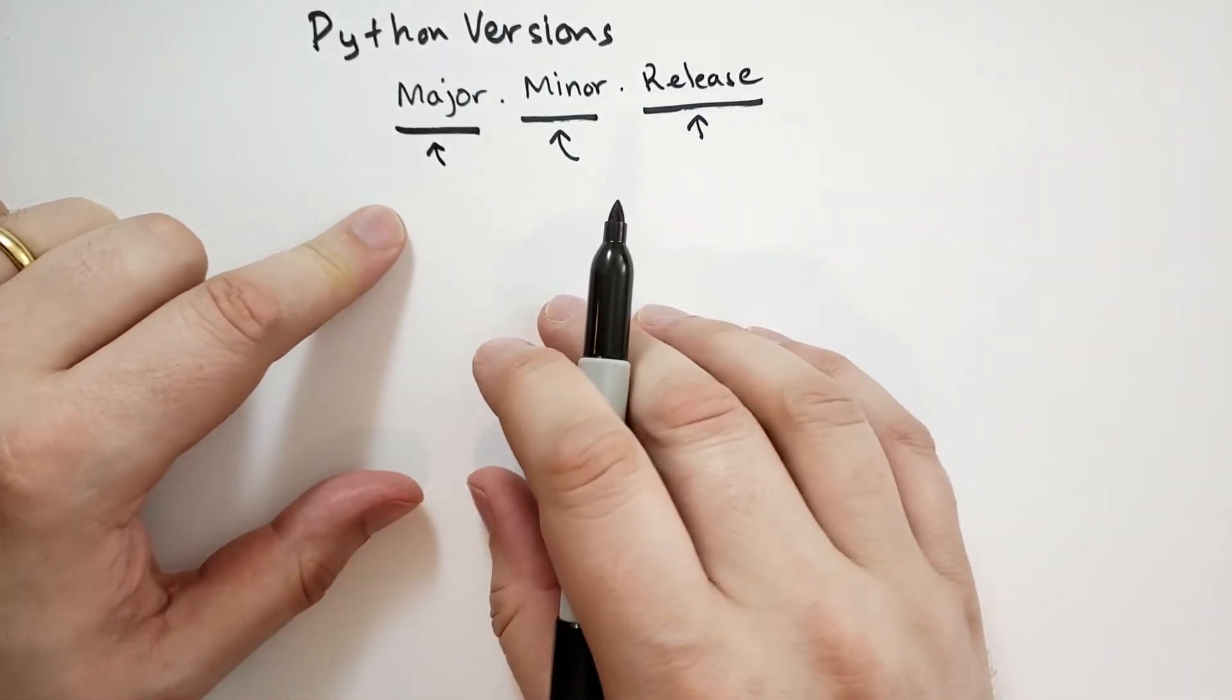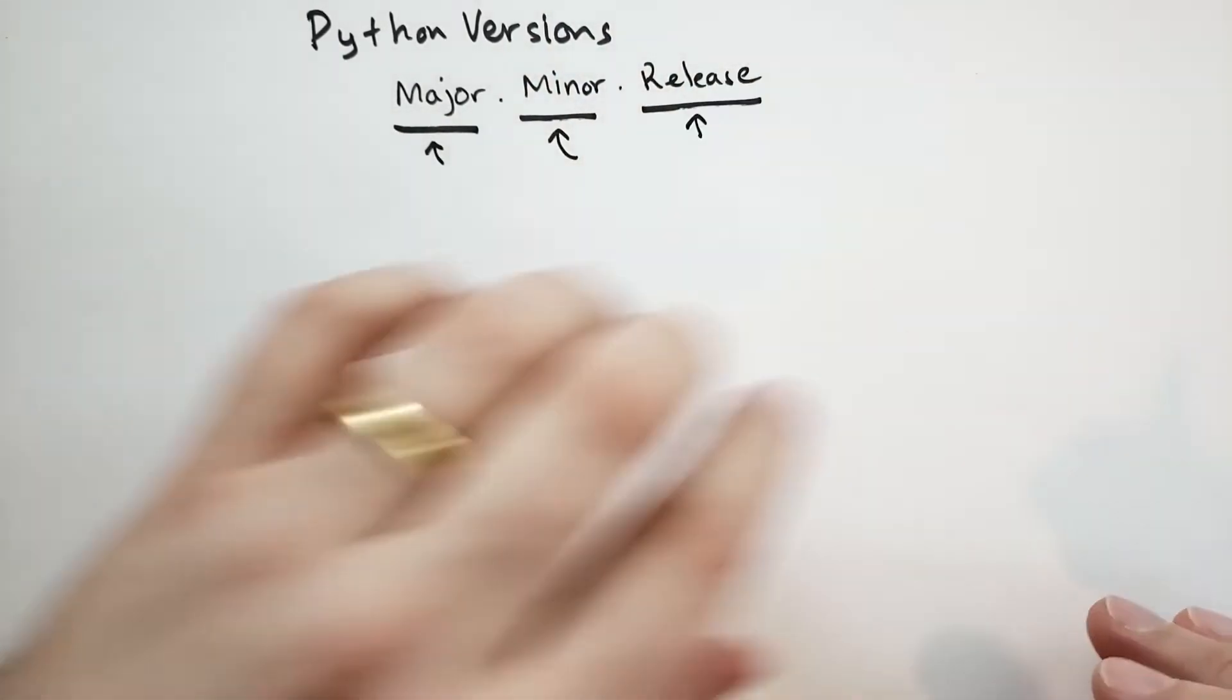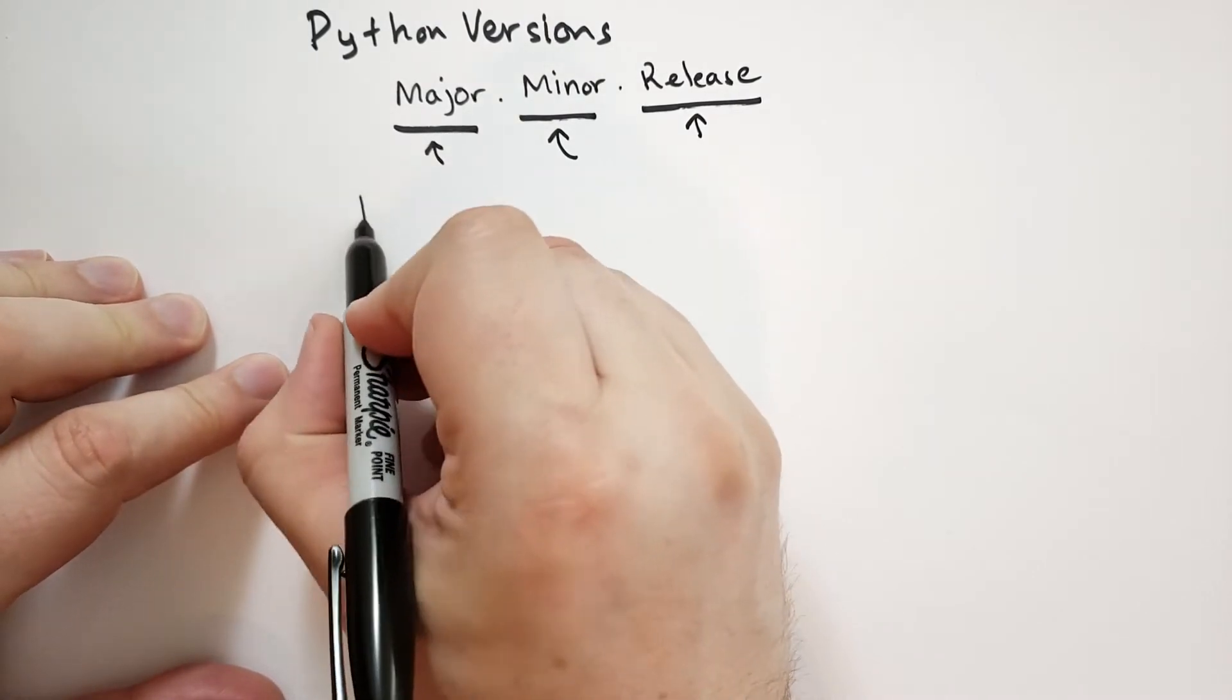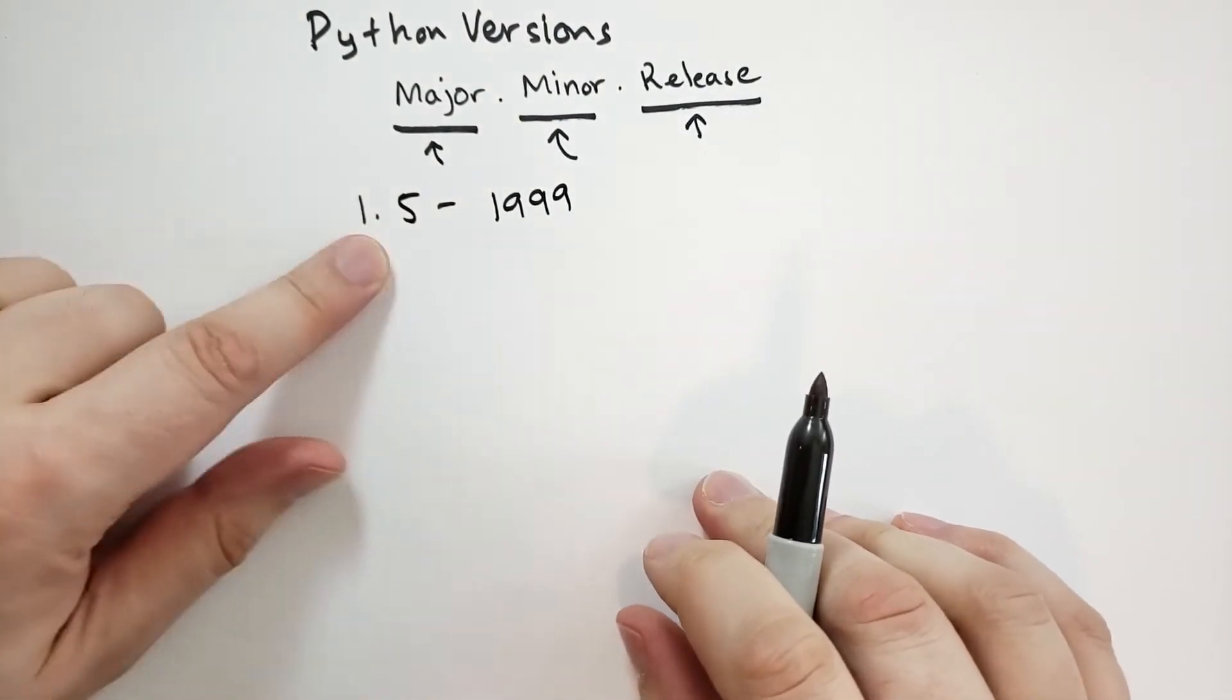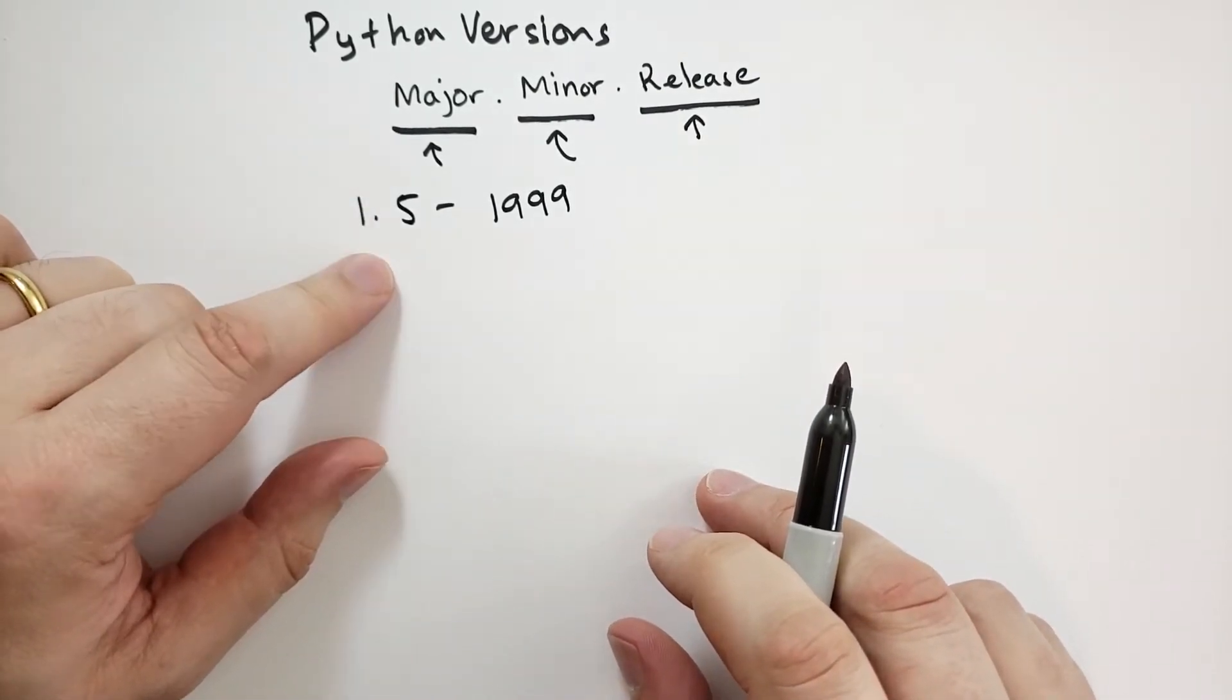Okay, so you might have heard about the whole Python 2 to Python 3 thing that happened recently. Well, not so recently, it's been happening for the past, wow, long time. Let's talk about the version numbers that we've seen. So 1.5, this was released back in 1999. And this is kind of the first version of Python that really hit prime time. People started using Python with this.